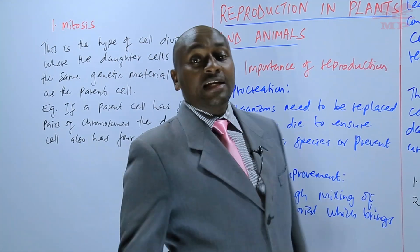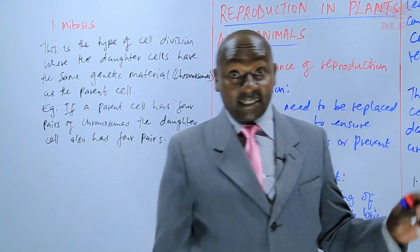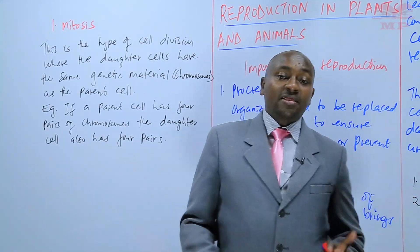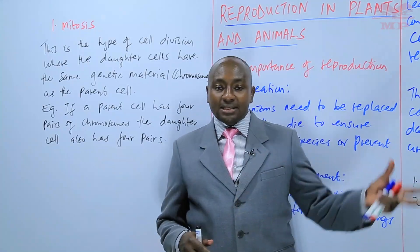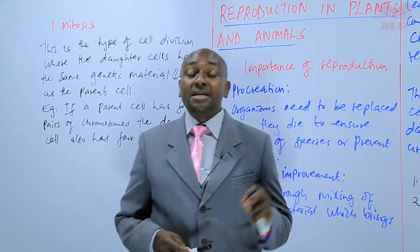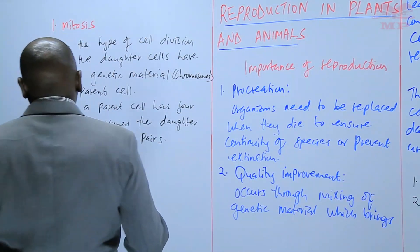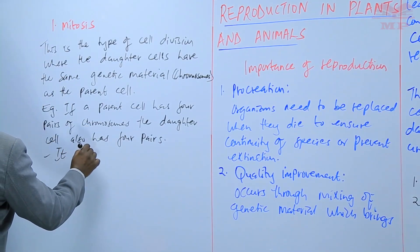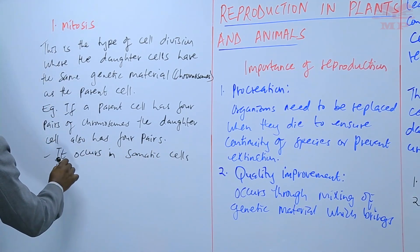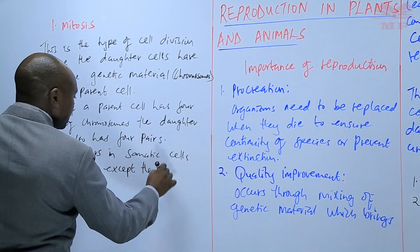Where does this type of cell division occur? It occurs in body cells — what we call somatic cells — all the other body cells except the gametes. The cells of the skin, the cells of the liver, the cells of the lungs — every part of our body except the gametes. It is the type of cell division that brings about growth and development. We can say it occurs in somatic cells, that is body cells, except the gametes.